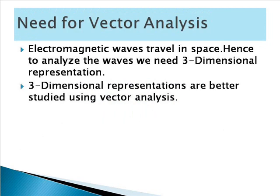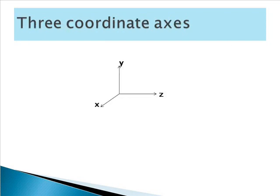Now we are going to see what is the need for vector analysis. Normally, electromagnetic waves travel in space. Hence, to analyze the waves, we need three-dimensional representation. Three-dimensional representations are better studied using vector analysis. Three dimensions means it has three axes — x, y, and z — all mutually perpendicular to each other. These are called coordinate axes.